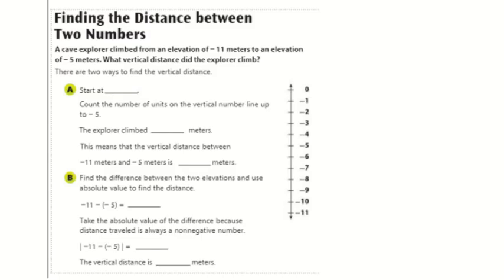Let's look at the first example. Finding the distance between two numbers. A cave explorer climbed from an elevation of negative 11 meters to an elevation of negative 5 meters. What vertical distance did the explorer climb? There's two ways listed here, but I'm going to make this three different ways. The first way is to use the number line here. I'm going to start at negative 11 meters. Count the number of units on the vertical line up to negative 5. 1, 2, 3, 4, 5, 6. I moved six places. So the explorer climbed 6 meters. This means the vertical distance between negative 11 and negative 5 meters is 6 meters.